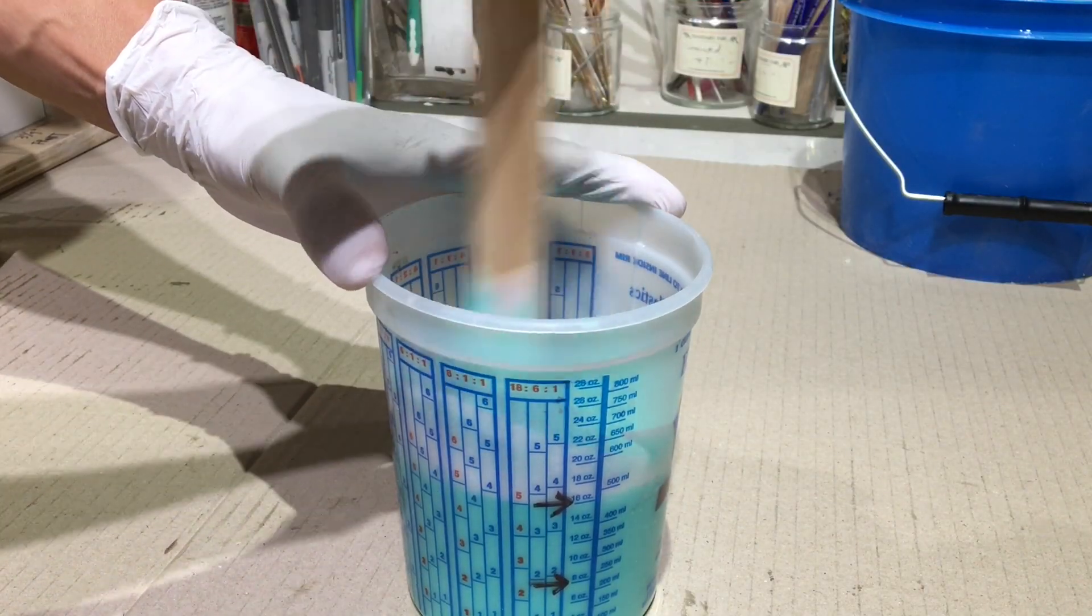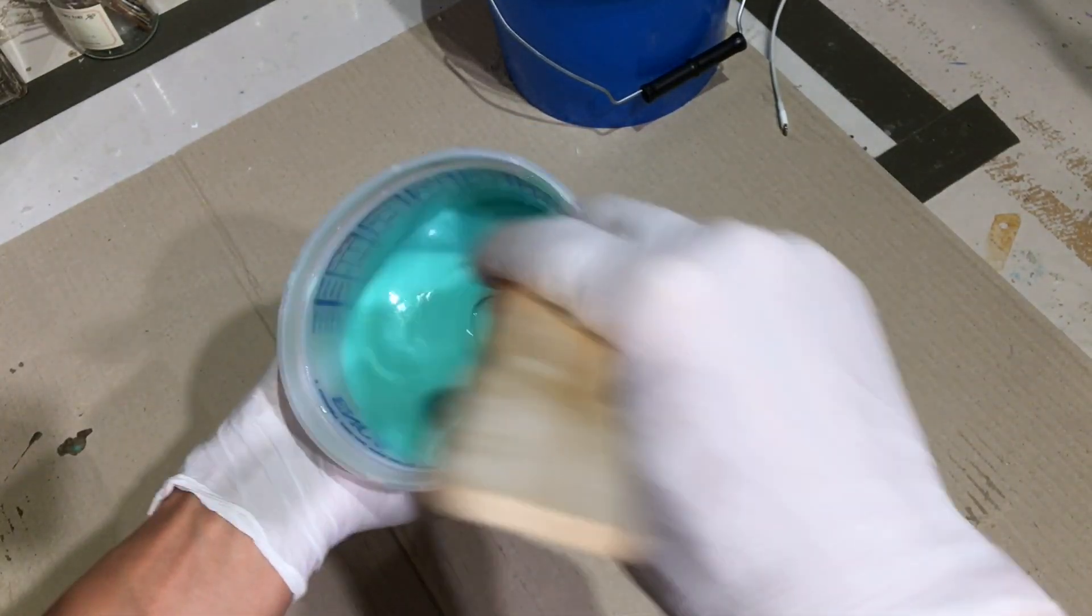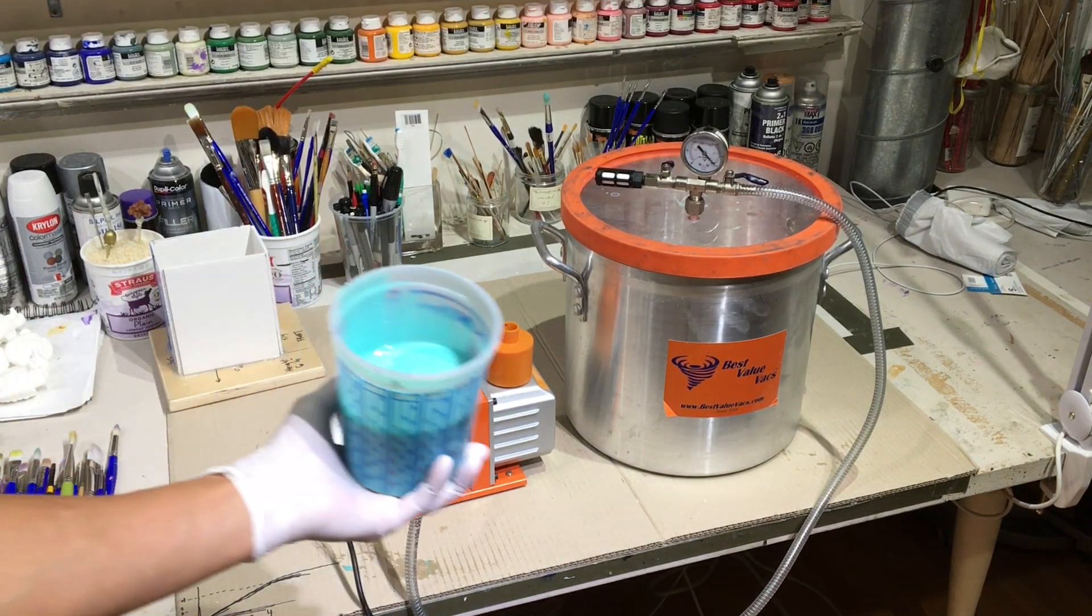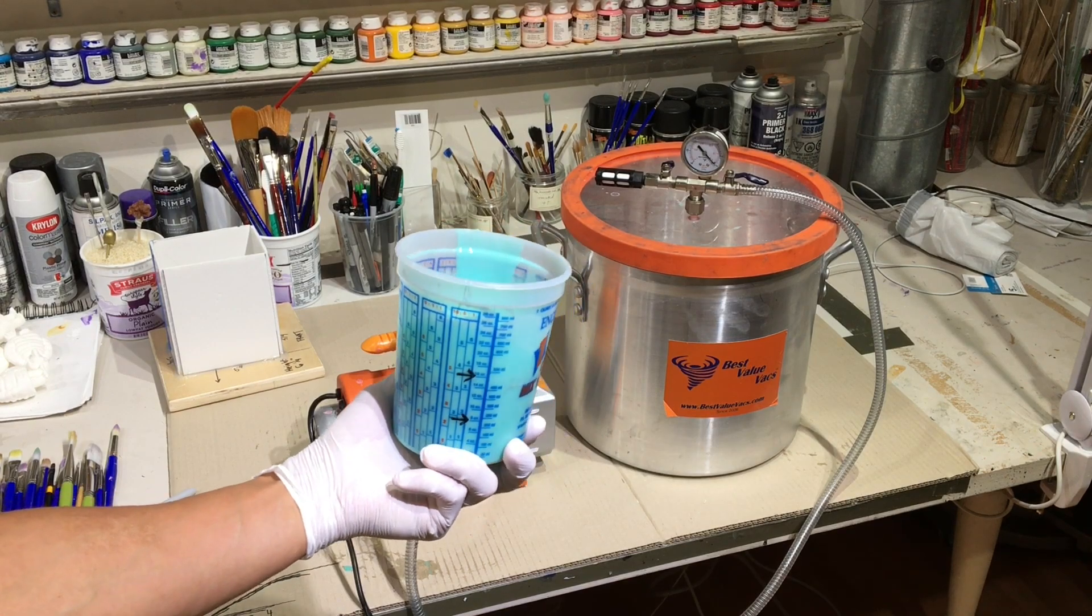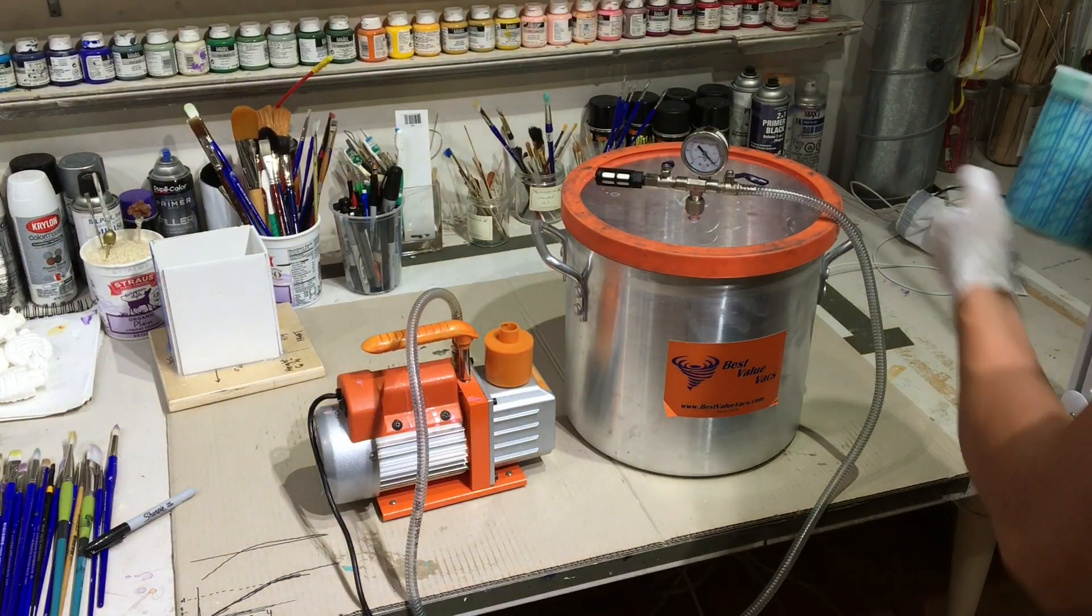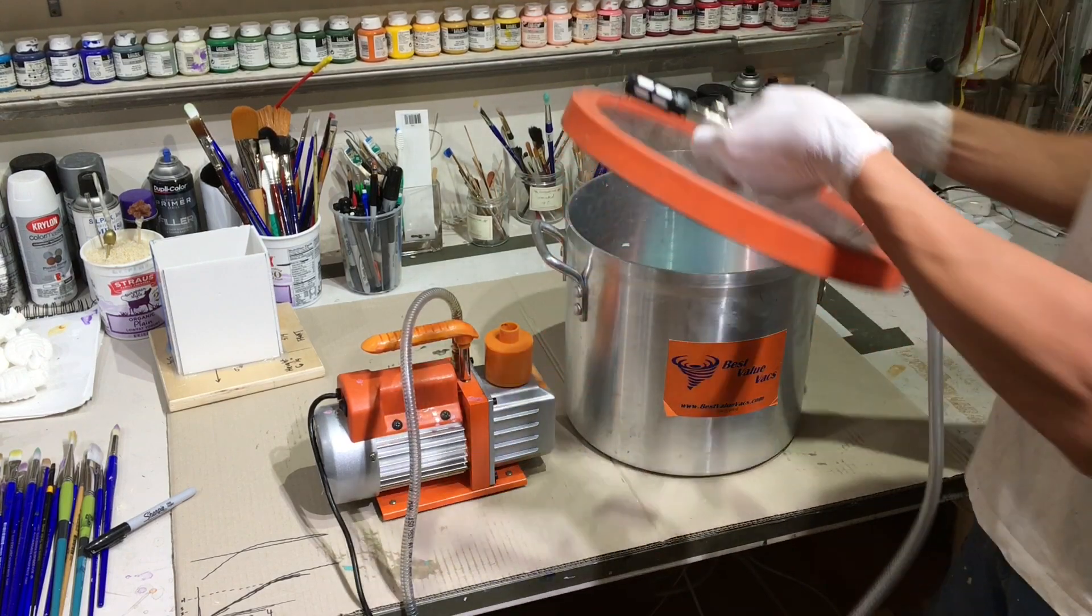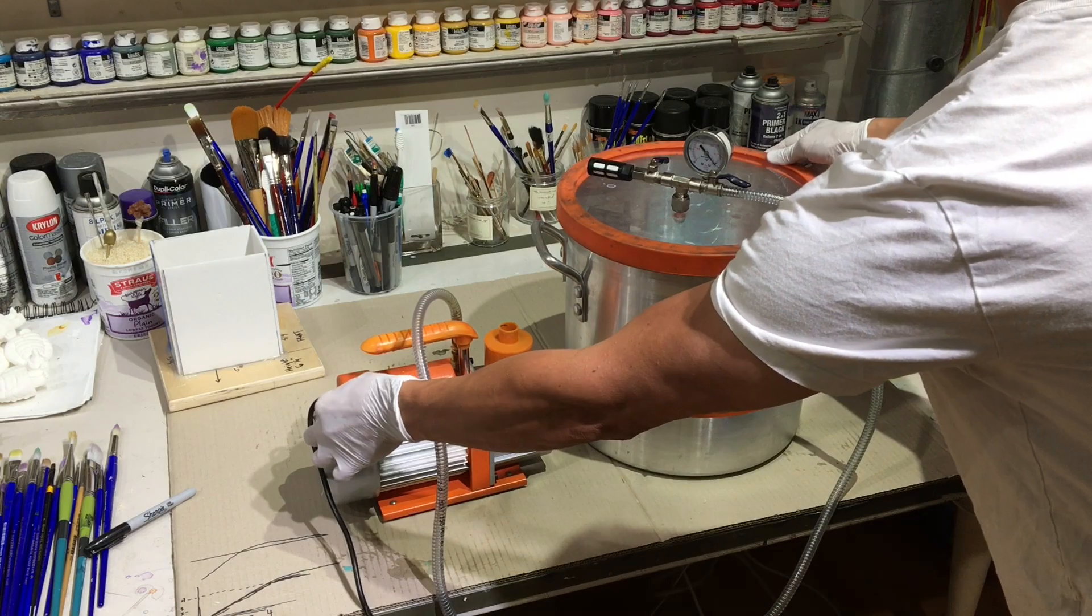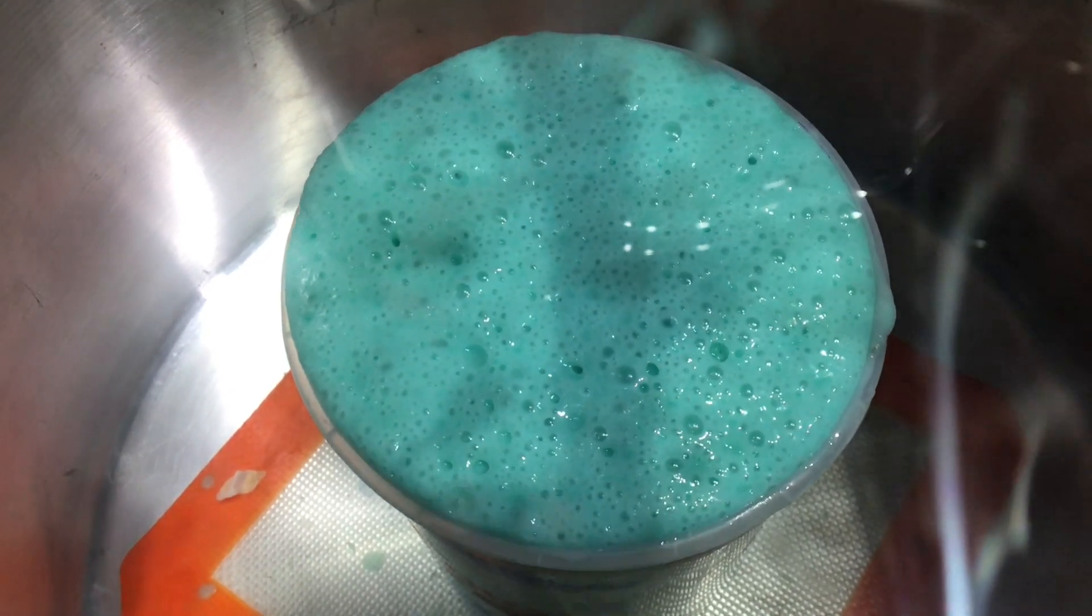Make sure to really scrape the sides and the bottom of the container really well when you're mixing. I like to degas all of my silicone with this apparatus here. This is a process that removes all of the tiny little air bubbles in the silicone. You place the silicone in this pot, put the lid on and then turn this little pump on and you're essentially creating a vacuum chamber that's sucking all of the air out of this pot and out of your silicone.